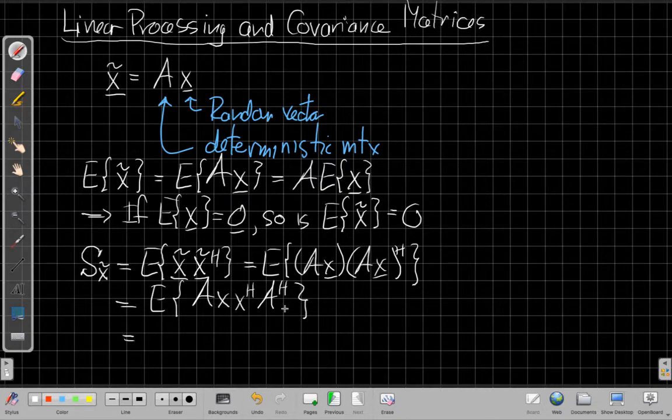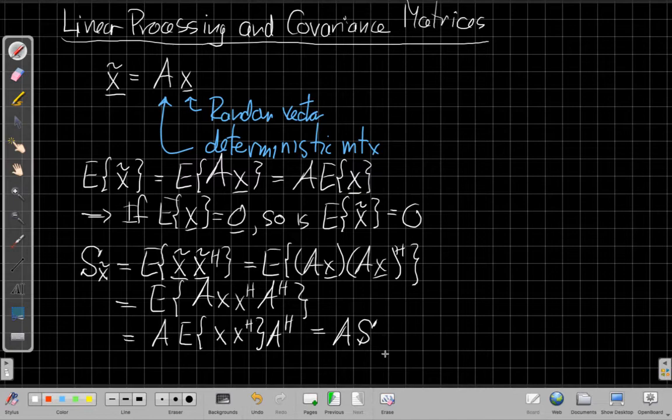And so when I look at this, again, the A's are deterministic. The randomness is inside. And so because this expectation is a linear operator, I can bring it inside the A's here. And then I recognize this inner expectation is the original spatial covariance matrix for my original X.